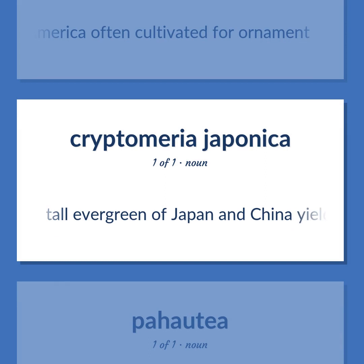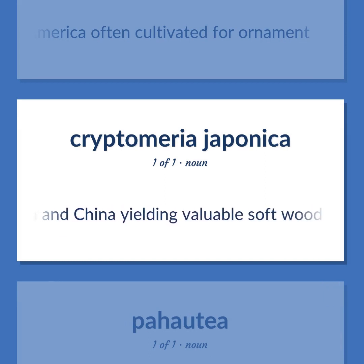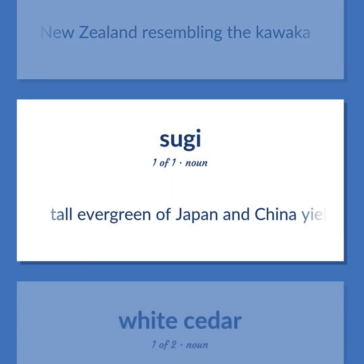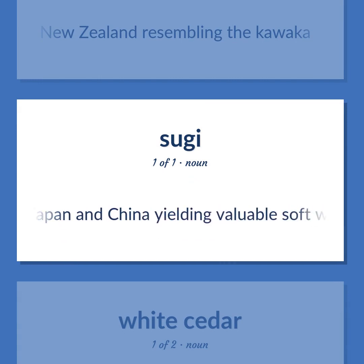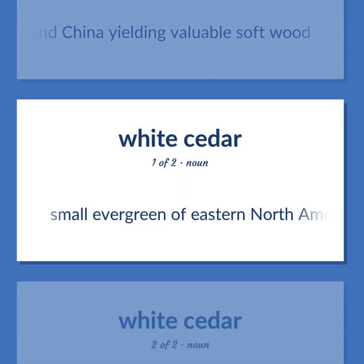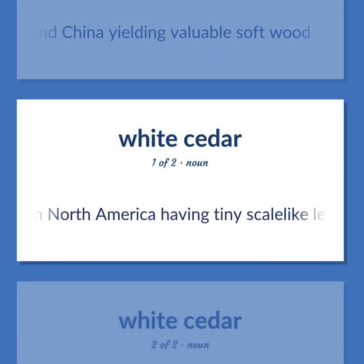Tall evergreen of Japan and China yielding valuable soft wood. Evergreen tree of New Zealand resembling the kawaka. Small evergreen of Eastern North America having tiny scale-like leaves on flattened branchlets.